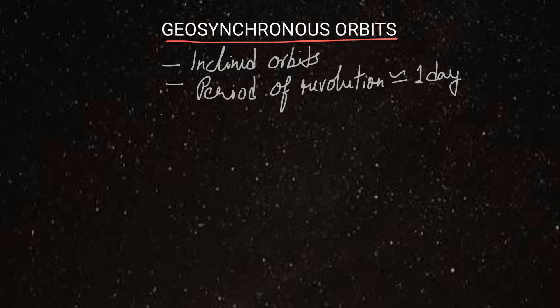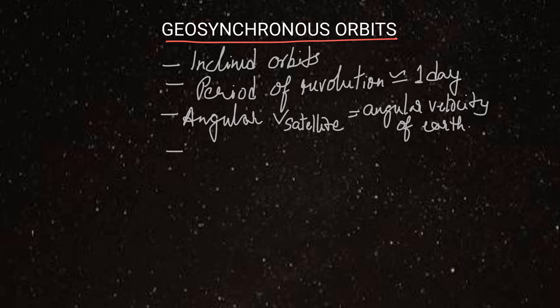Also, the angular velocity of these satellites is equal to angular velocity of earth. But these satellites do not appear stationary from earth. They look oscillating. Please note here that geostationary orbits are the special case of geosynchronous orbit. When a geosynchronous orbit's inclination becomes zero with the equator and they lie exactly above the equator, then they are called geostationary orbits.